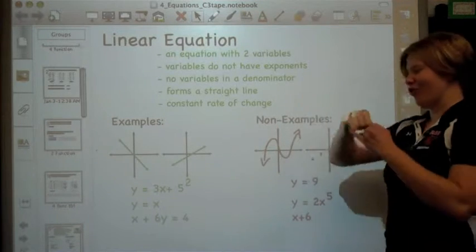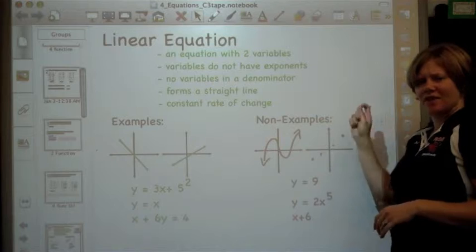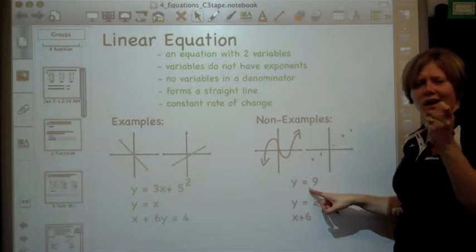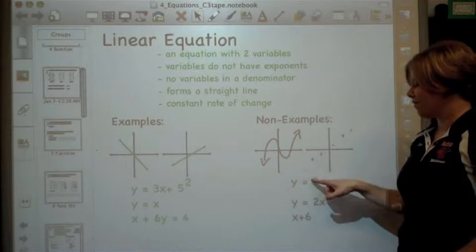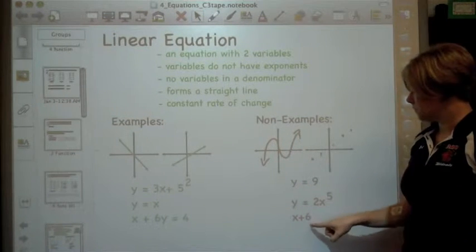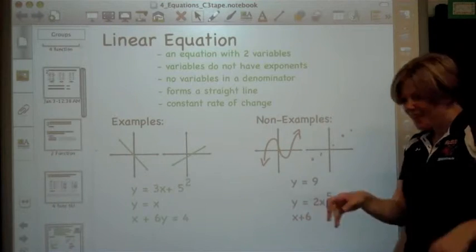Here are some non-examples. These are not linear. A squiggly line, dots, those are not linear equations. This one right here doesn't have an x, so there's only one variable, it's not a linear equation. This one has an exponent with a variable, which is not linear. And this one isn't even an equation.